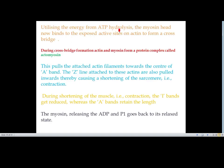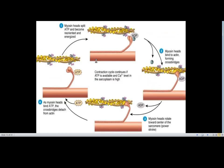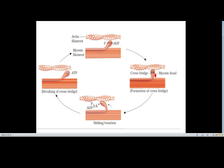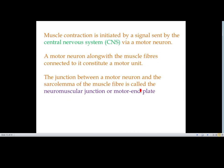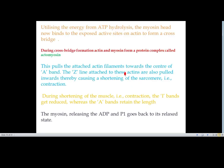Utilizing the energy from ATP hydrolysis, the myosin head now binds to the exposed active site on actin to form a cross bridge. During cross bridge formation, actin and myosin form a protein complex called actomyosin. This pulls the attached actin filament towards the center of the A band, and the Z lines attached to these actin filaments are also pulled inwards, causing a shortening of the sarcomere — that is contraction.